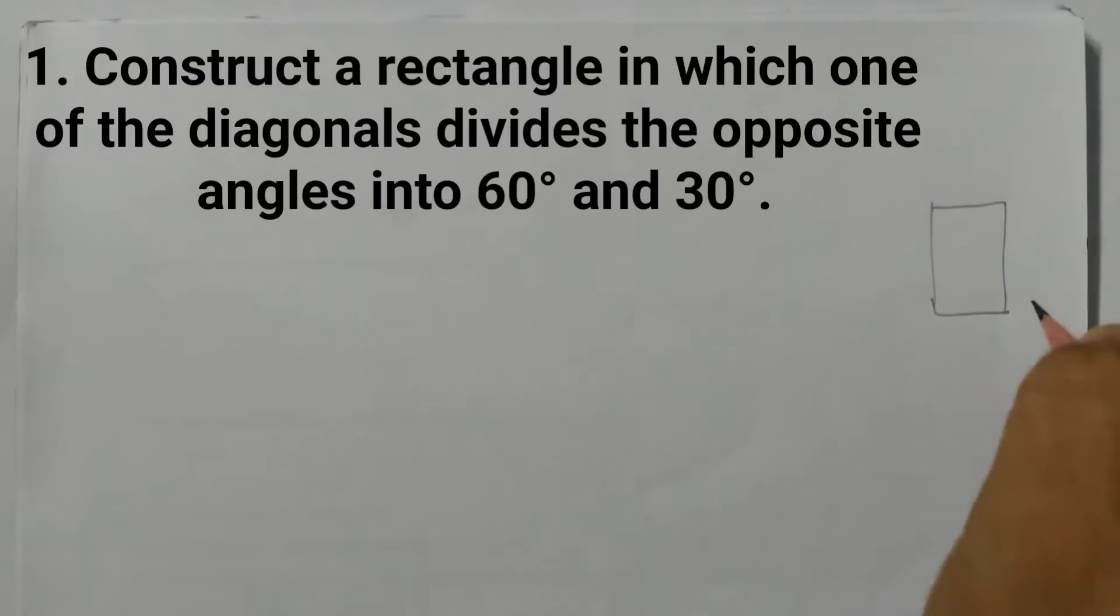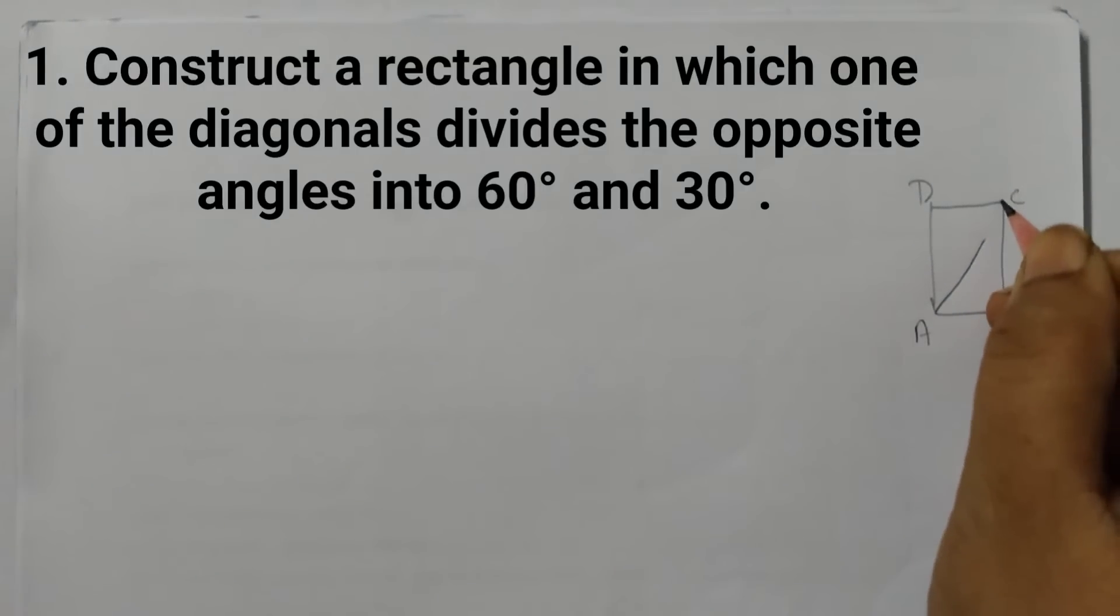So we have a rectangle like this. Then we will label it, say A, B, C and D. And now we will draw a diagonal. This is a diagonal joining the points A and C, this line here is a diagonal.